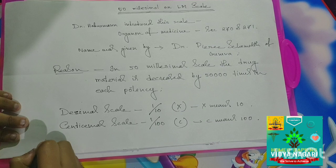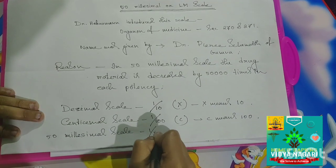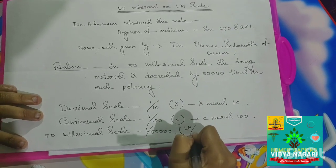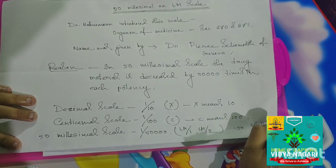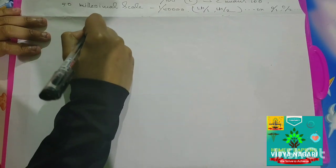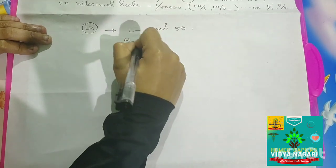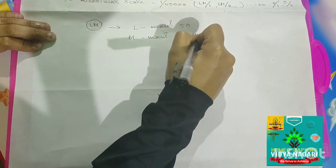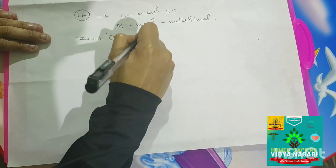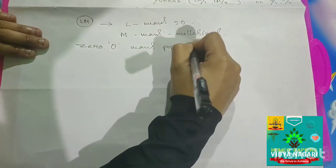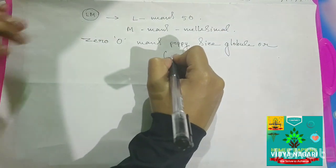In the 50 millisimal scale, the ratio is 1 by 50,000. Here we write LM/1, LM/2, etc., or 0/1, 0/2, etc. The L means 50 and M means millisimal. The O refers to poppy size globules, which is actually globule number 10.